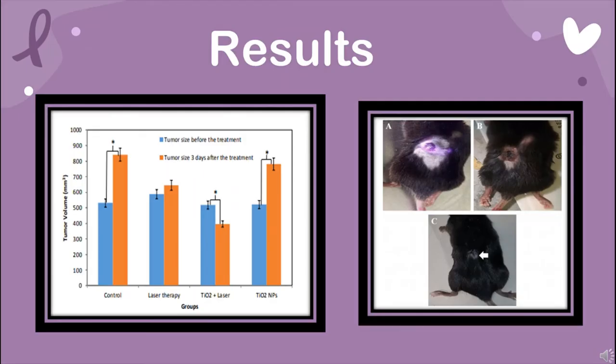Treatment was carried out according to four groups: Group 1, titanium dioxide plus laser; Group 2, laser therapy; Group 3, titanium dioxide nanoparticles; Group 4, control with no treatment. Groups 1 and 2 were irradiated by a continuous wave. Three days after laser excitation, the tumor sizes were measured. The tumor sizes of different groups were analyzed before and three days after PTT treatment, and the results show a significant difference between groups.